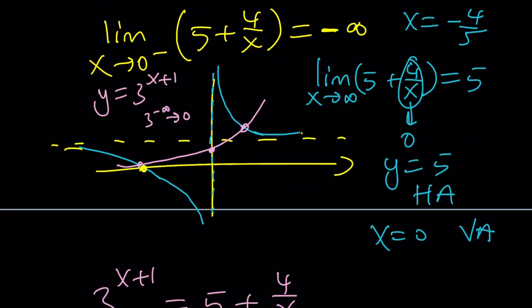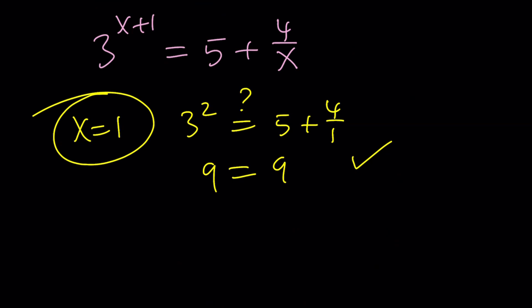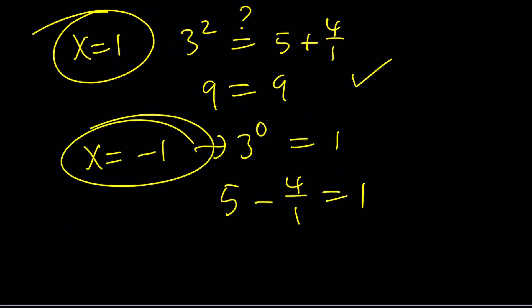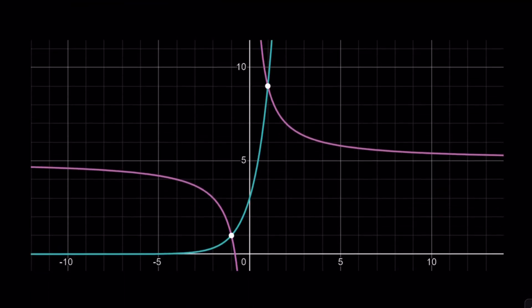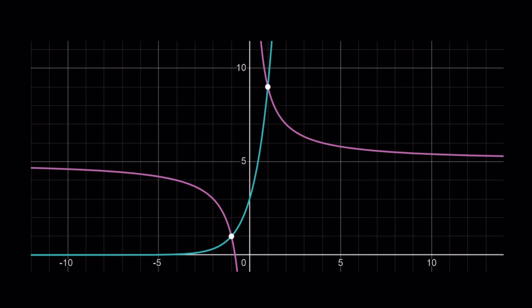If x equals one is a solution, does that mean x equals negative one is a solution as well? Let's plug it in. If x is equal to negative one, you get three to the power of zero, which is one. If x is negative one, you get five minus four over one, which is one. So negative one is another solution. And let's go ahead and take a look at the graph. There's a much better graph than mine. And as you can see, they intersect at one and negative one.